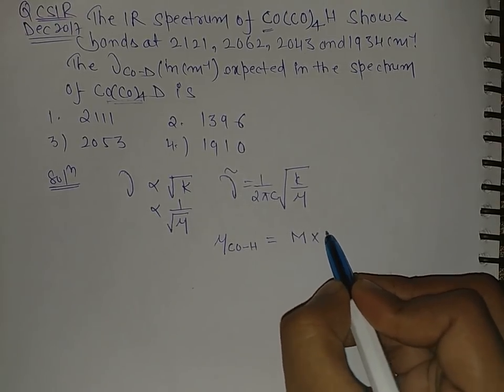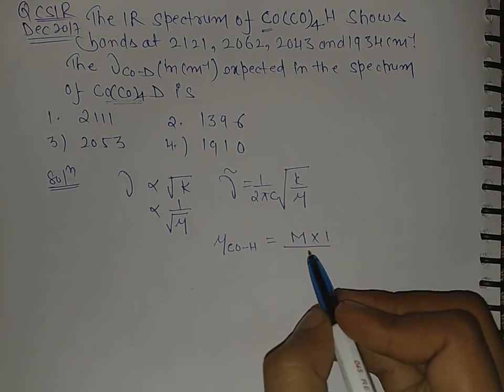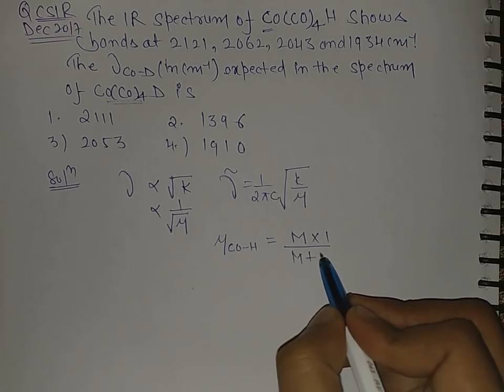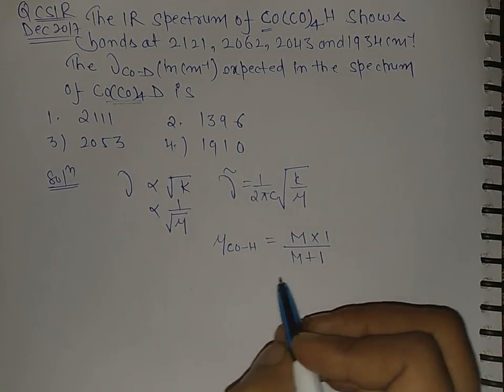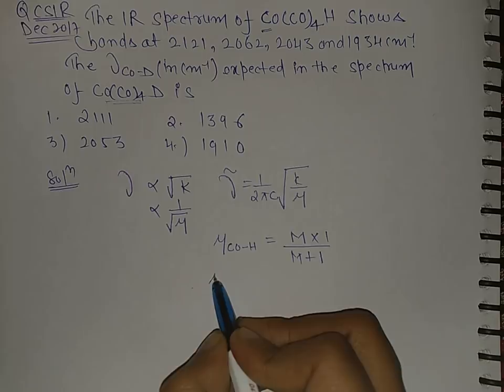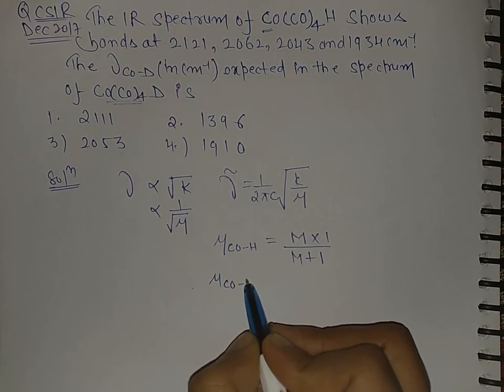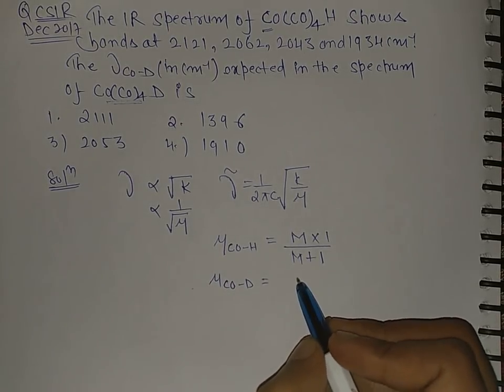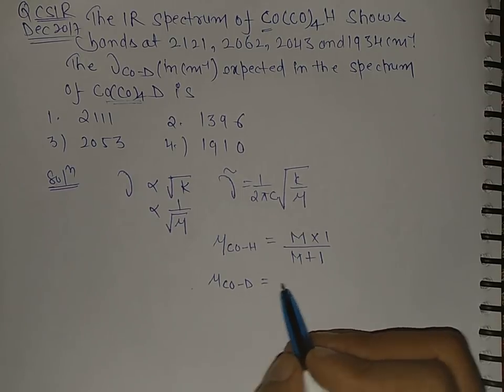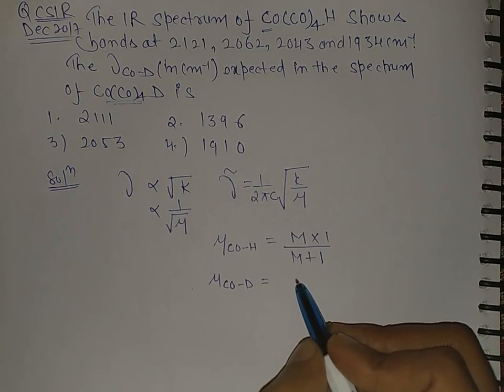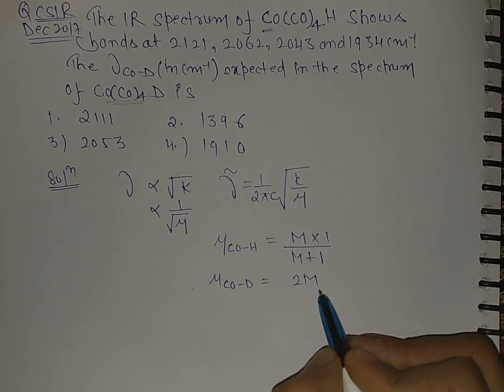So this will be, let's say mass of the cobalt is m capital M, so this will be M times 1 over M plus 1. Now the reduced mass of cobalt and deuterium is how much? This is m1 m2.